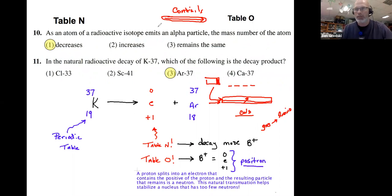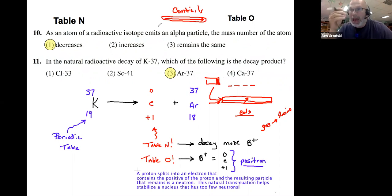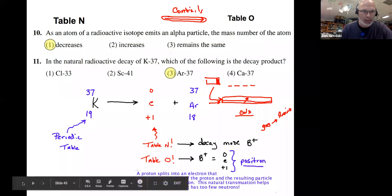It's called a cloud chamber. He's going to go through his demonstration and we're going to watch alpha, beta, and some gamma emission. It's pretty cool.